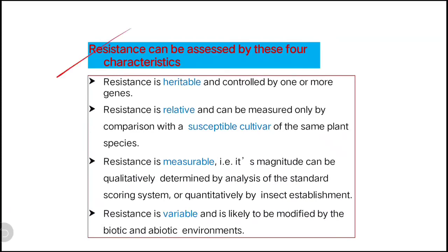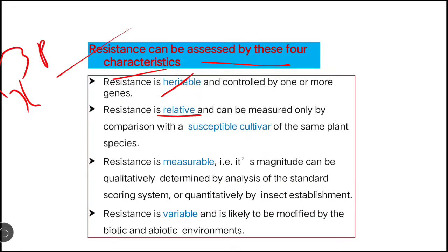Now we will discuss how resistance can be assessed by four characters. First, resistance is heritable — as already discussed in the definition, it is heritable from the parent generation. Second, resistance is relative.